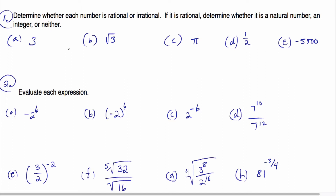The first thing we want to do is understand what kind of numbers we're dealing with. There are several types of numbers listed here, and they either will be rational or irrational. All the numbers that we see in this class will be one of these two types.